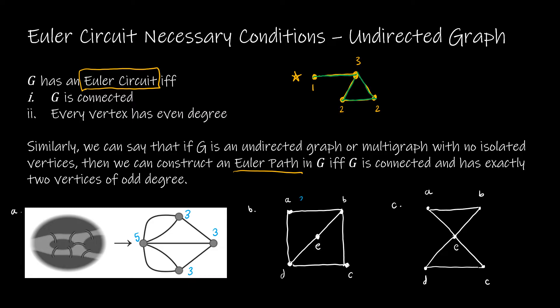Let's look at graph B. I've got degrees of two, three, two, three, and two. Based on that, it seems I should be able to have an Euler path — meaning I'll go over each edge but not begin and end at the same point. I have to start at a vertex of odd degree, so I'll start at D. Going to A, then back down to D, then over to C, then back up to B. I began at D, which was odd, and ended at B, which was odd. So B has an Euler path.